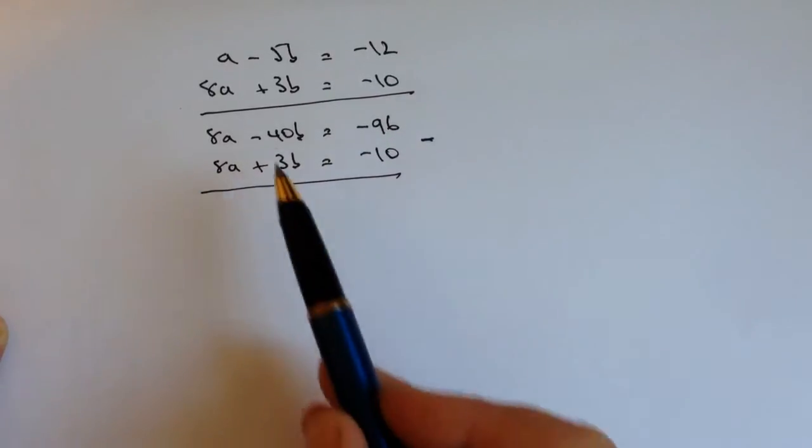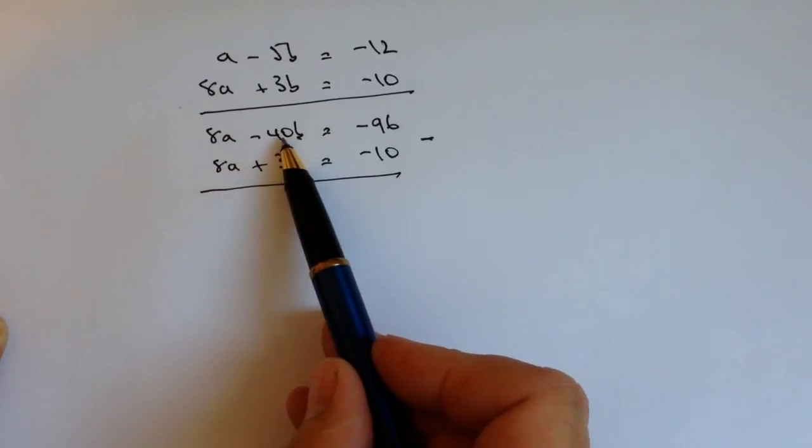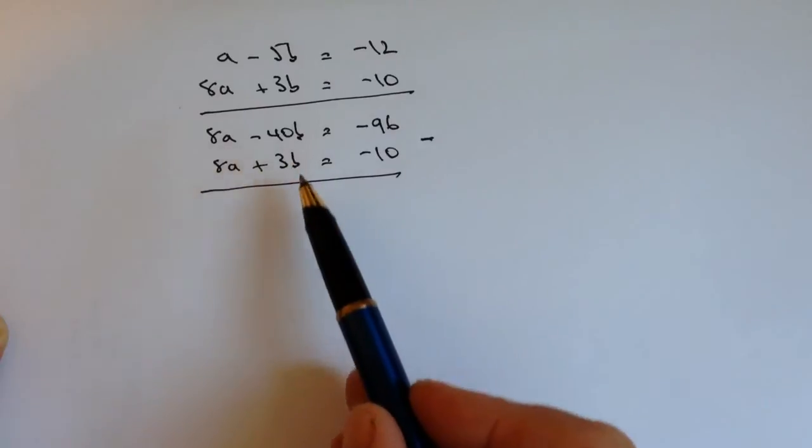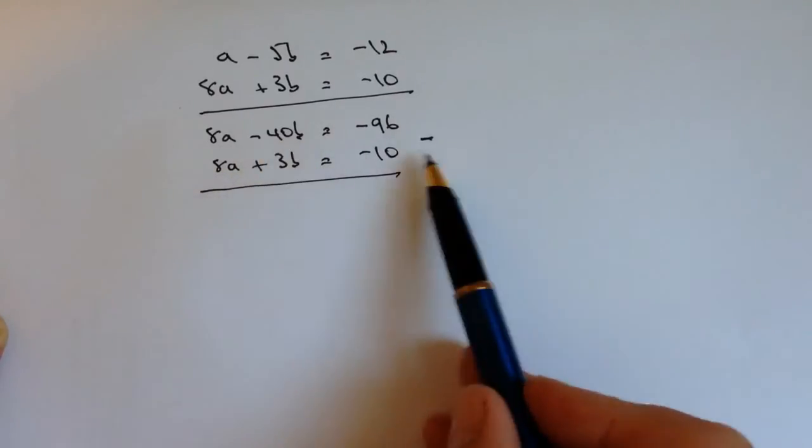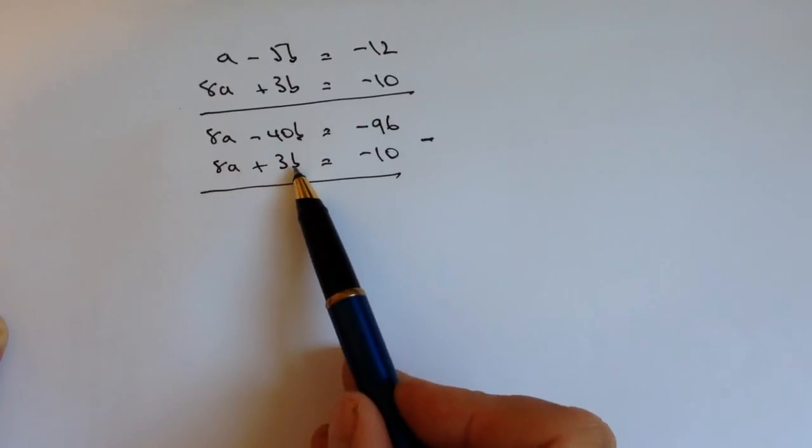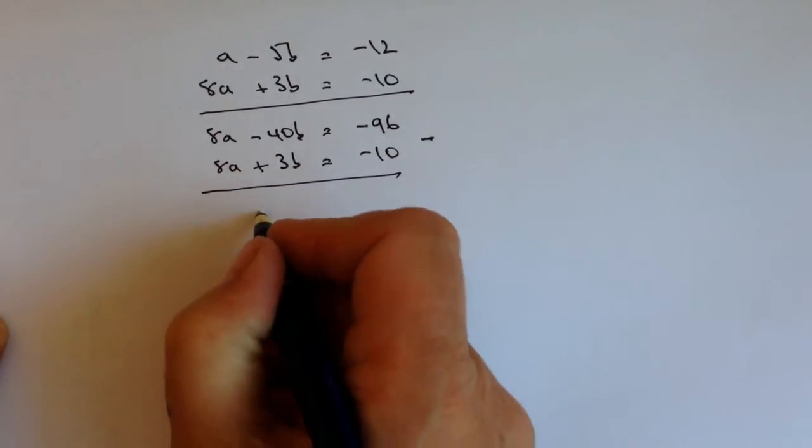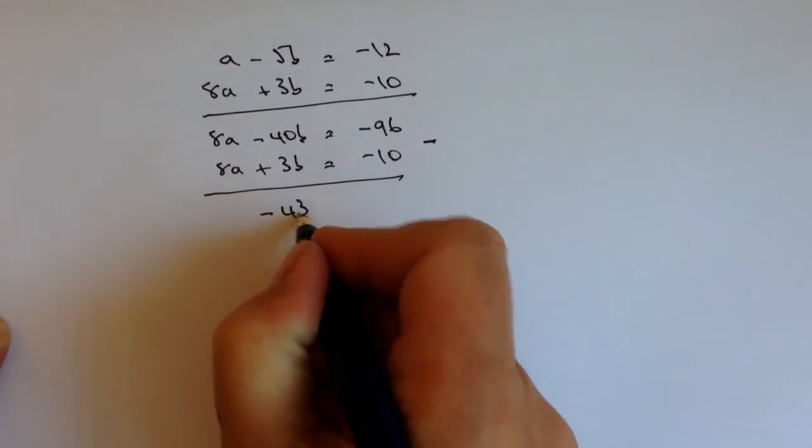Okay, so now I can deal with these b terms. So I've got -40b minus +3b. Well, that's the same as saying -40b - 3b. So -40 - 3 is going to be -43b.